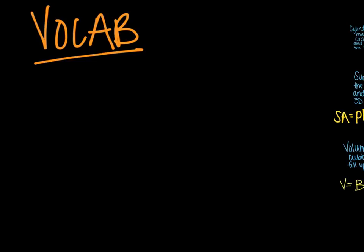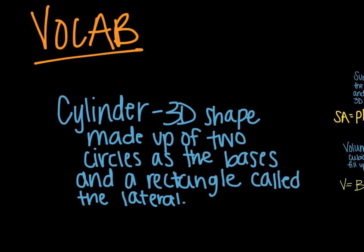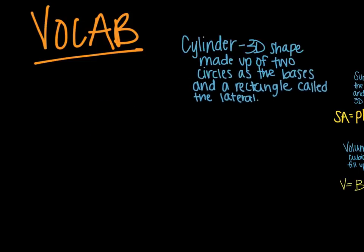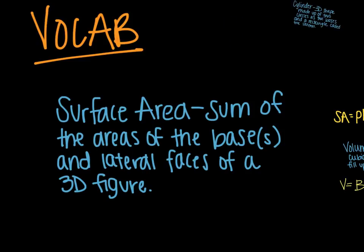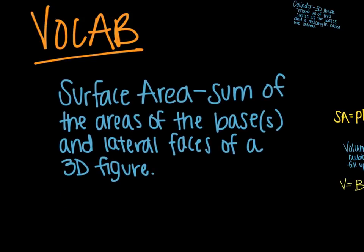Before we get started, I want to understand the vocabulary that goes with it. A cylinder is a 3D shape made up of two circles as the bases and a rectangle in the middle part, which is called the lateral. Surface area is the sum of all the areas of the bases and lateral faces of a 3D figure. You'll also see it referred to as wrapping paper.